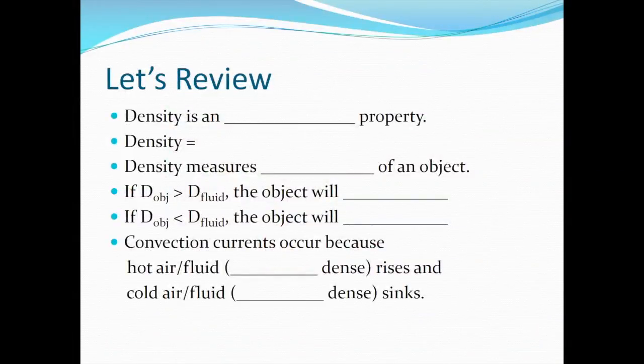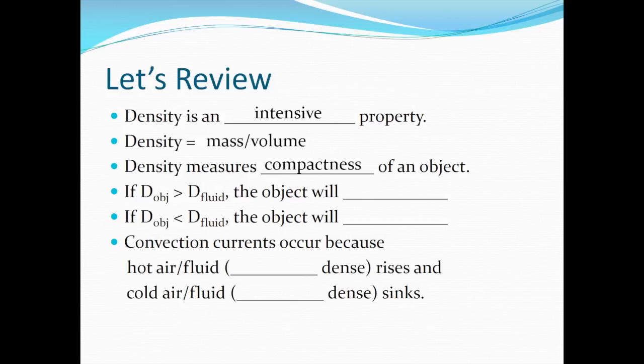Let's review the concepts we've covered in this lesson. Take a few minutes to try to answer these questions before you view the solutions. Density is an intensive property. It's the same regardless of the amount of material. Density is equal to mass divided by volume, which indicates that density measures the compactness of an object. If the density of an object is greater than the density of the fluid, the object will sink. On the other hand, if the density of an object is less than the density of the fluid, the object will float. Convection currents occur because hot air or fluid, which is less dense, rises and cold air or fluid, which is more dense, sinks.